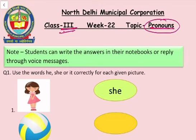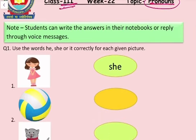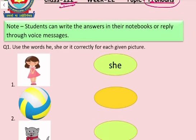Question number 1. Use the words he, she or it correctly for each given picture. Hame neche dee gai pictures ko deekhte huye he, she ya it ka preyok karna hai. Pahli picture, first picture, ek lardki ki hai, kisii bhi girl ke liye hum she word use karenge.